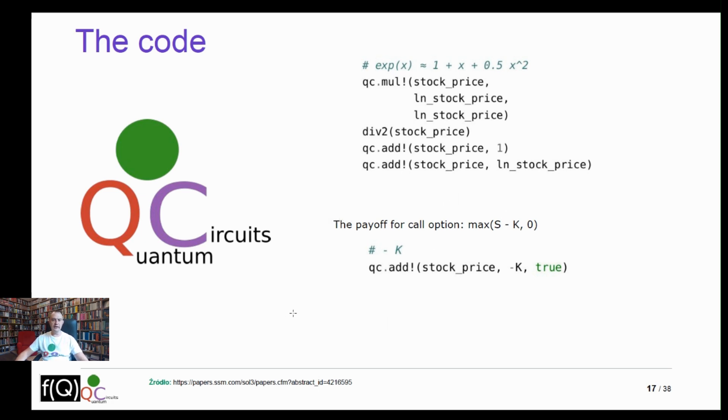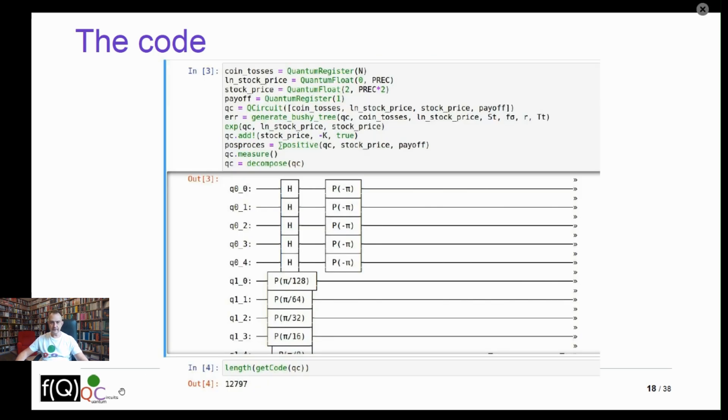And finally, we calculate the payoff function of derivatives. For the call option, for example, we can easily subtract the strike price and use the sign qubit in the control operation to choose whenever the option is in the money or out of the money. And this was the main point of creating the library. We want to focus on the implementation of the financial function and not on playing with a single qubit.